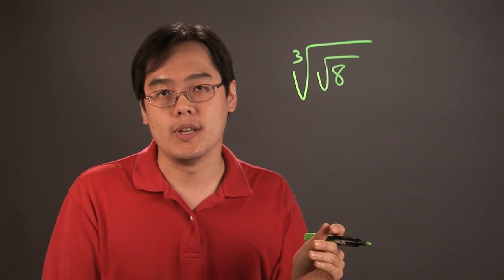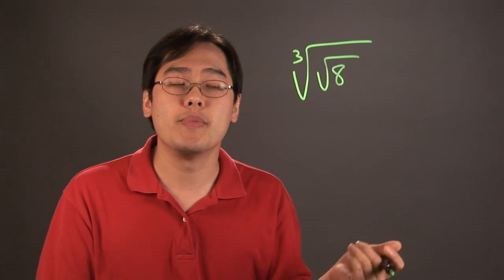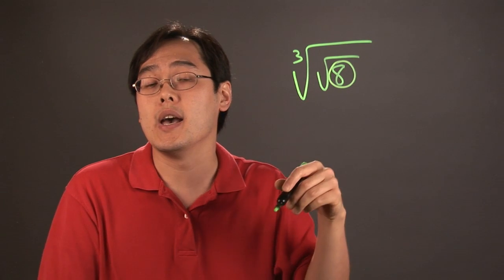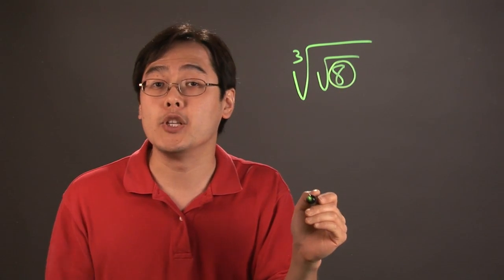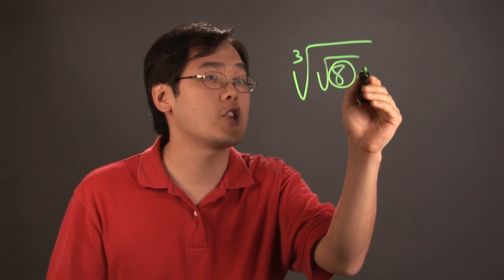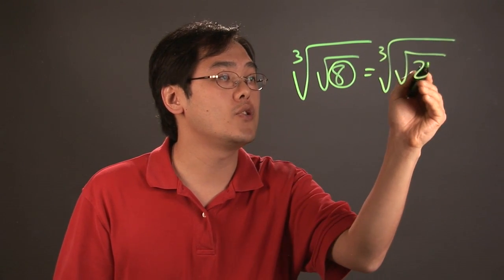One of the things to consider to simplify cube roots or square roots, for that matter, one approach would be to rewrite the number on the inside as a power. So the simplest power that 8 can be thought of would be 2 to the third. So you can rewrite this expression as the cube root of the square root of 2 to the third power.